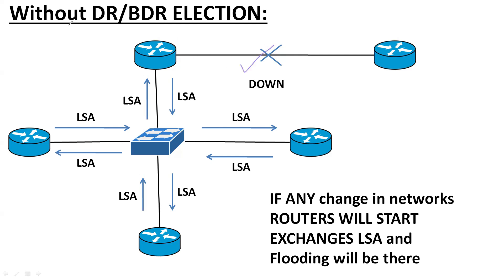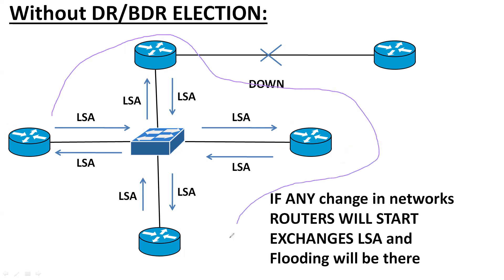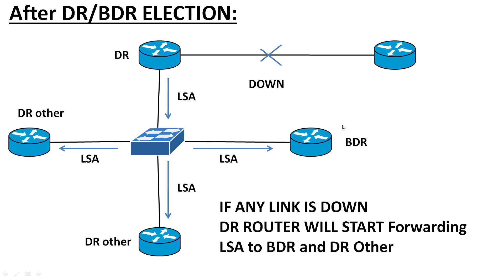Let us assume this link is down and there is no DR or BDR in the network. What will happen is that these routers will generate LSAs that will be continuously forwarded throughout the network, because the switch has a property to broadcast — any broadcast received will be forwarded everywhere. This causes LSA flooding among these four routers, which is a disturbance for the network.